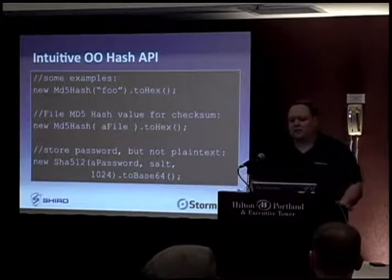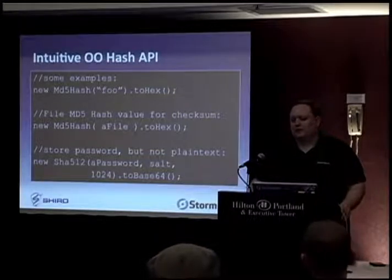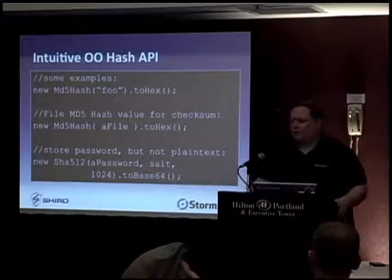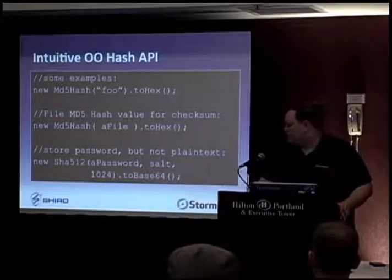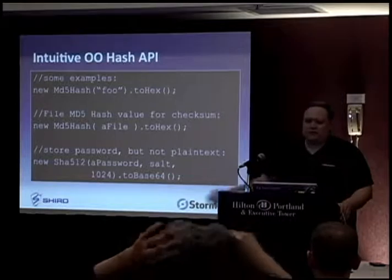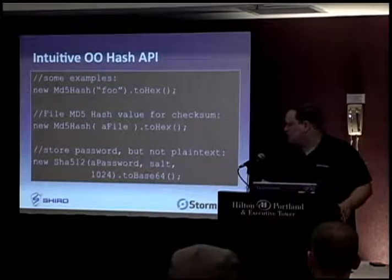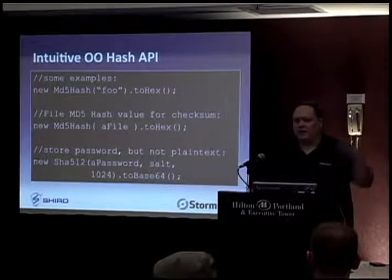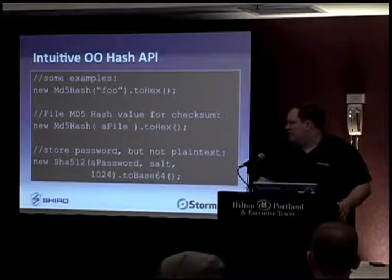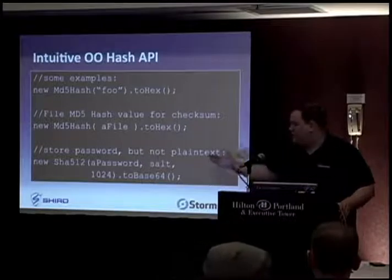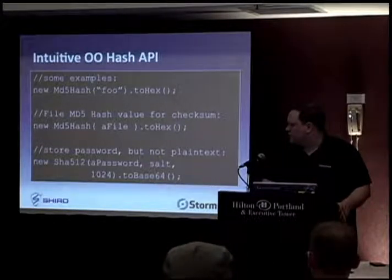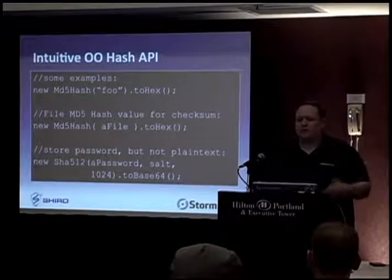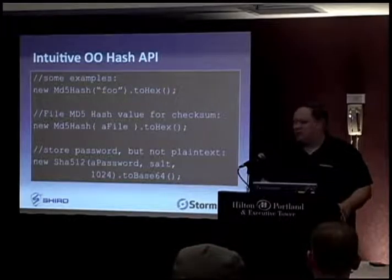In Shiro 1.3, we'll probably have bcrypt natively supported using the Blowfish key scheduler to artificially slow down the computing process. These are techniques used to thwart attackers in the event that your password database is actually compromised. It's also pretty easy to create different hashes in Shiro. There's also a generic hash class that allows you to pass in the name of the algorithm, so if there's a hash algorithm you want to use that's not part of the JDK — maybe it's in Bouncy Castle — you can pass that in as well.